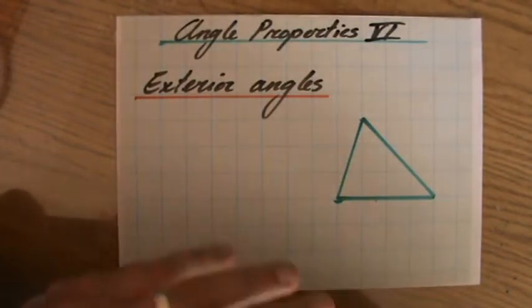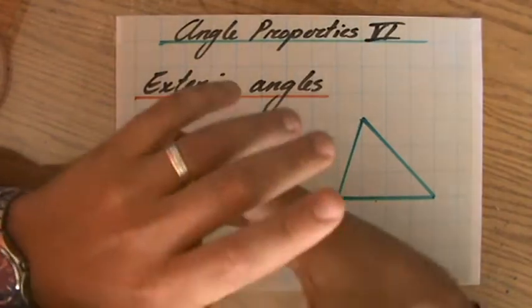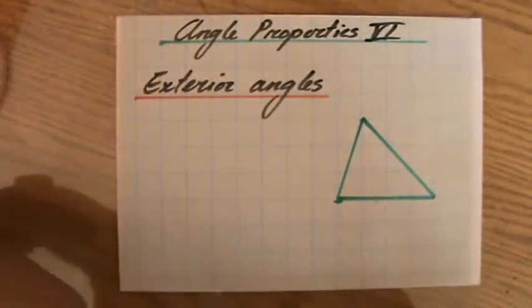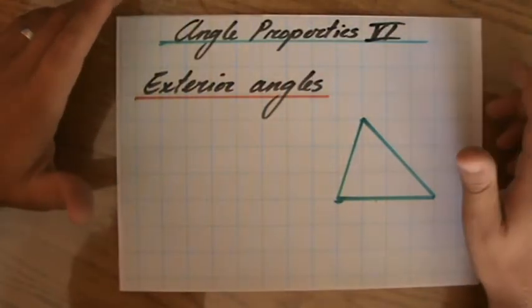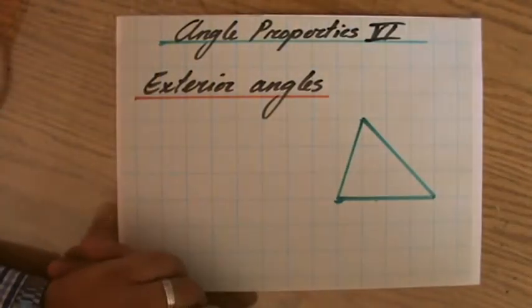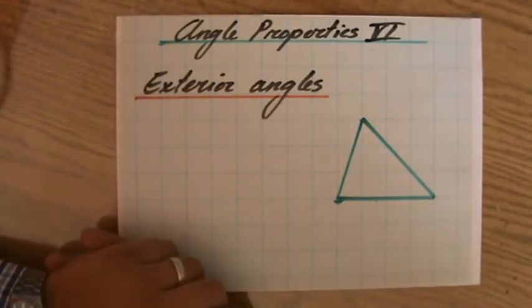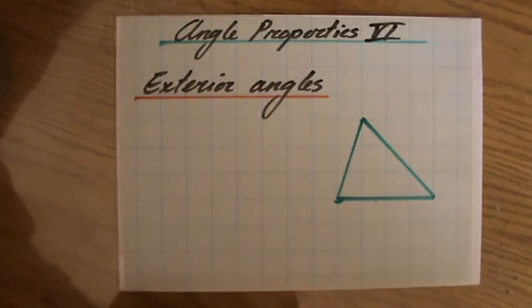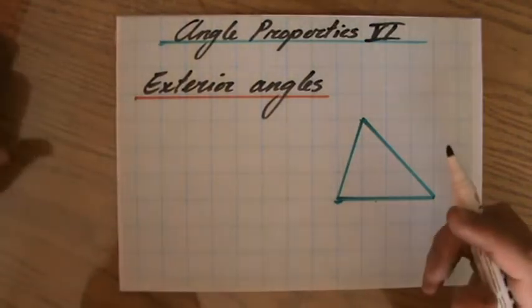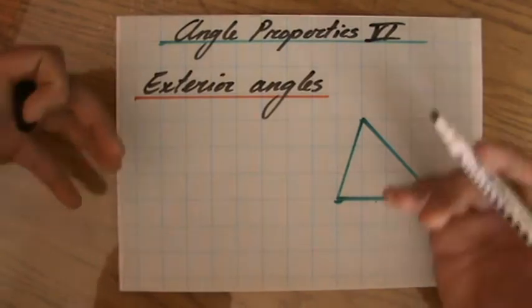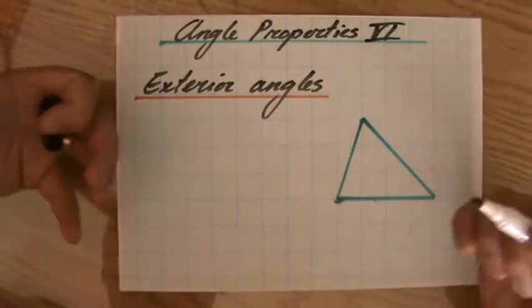It's time to start talking about exterior angles. So far we spoke about interior angles and the sum of interior angles of every polygon, so check my site explainingmaths.com and make sure you've seen those videos. Exterior angles are the angles on the outside - 'X' exits, exterior.